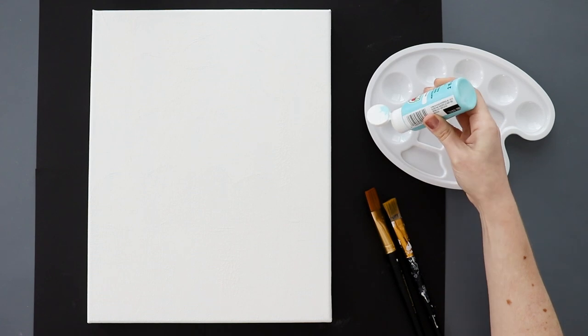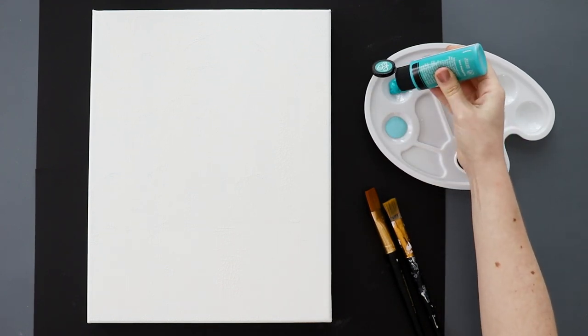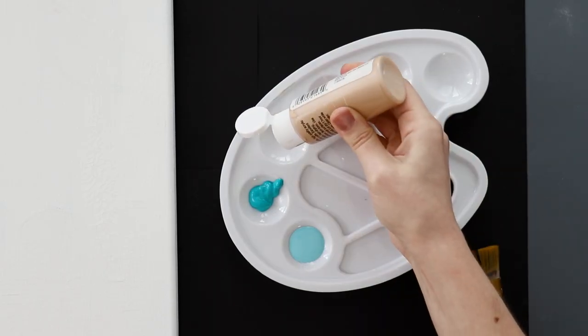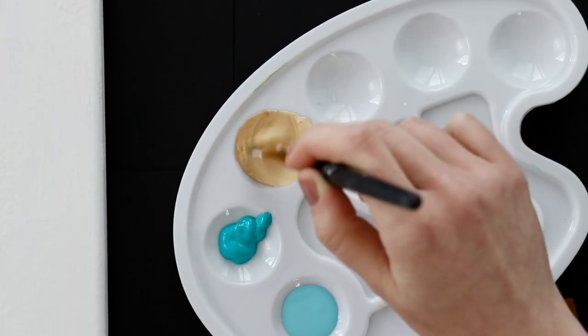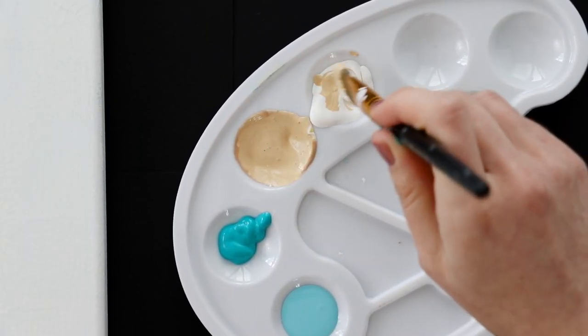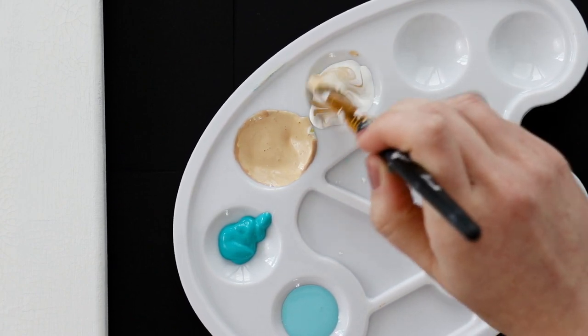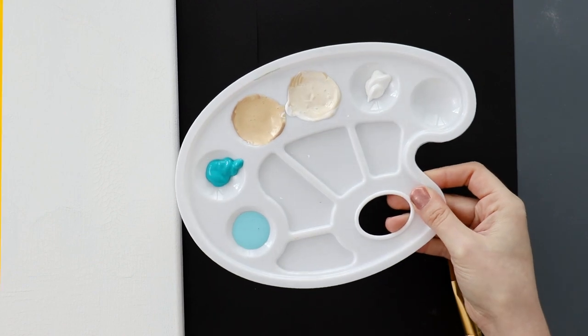So the first thing we need to do is get our paint ready. You'll need a light blue paint and teal paint for the water. And then for the sand, I'm mixing tan, yellow, and white to get a light tan color. And then I'm also mixing a bit of that with more white to get a lighter tan color. And then you'll want some plain white paint as well.